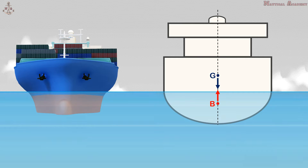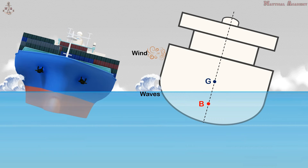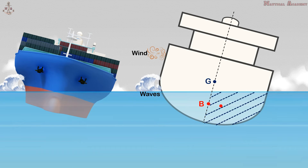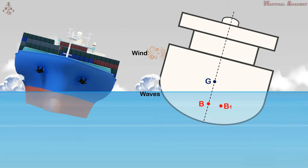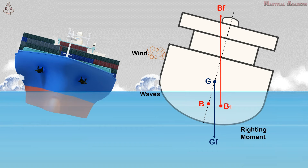If the ship is heeled to some angle due to external forces such as waves or wind, the center of gravity will remain in the same position as long as there is no shift of cargo or weight within the ship. But the center of buoyancy will move to the low side of the ship because the volume displaced is larger on the low side, causing the center of buoyancy to shift from point B to B1. The buoyancy force will now act vertically upward through the new center of buoyancy at B1, while the gravitational force will act through the original center of gravity. Both forces create a couple moment called the righting moment, which will bring back the ship to its upright position.